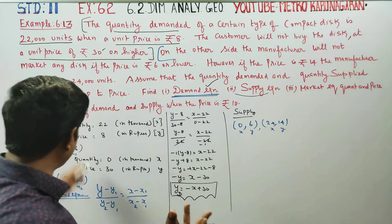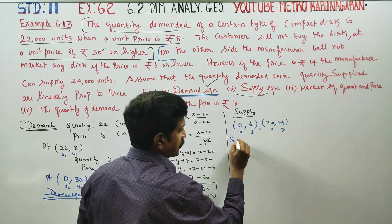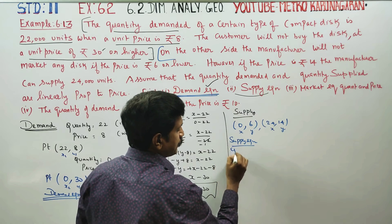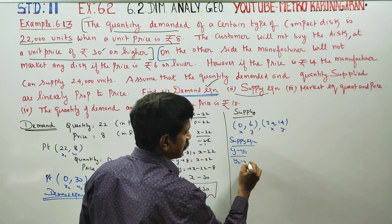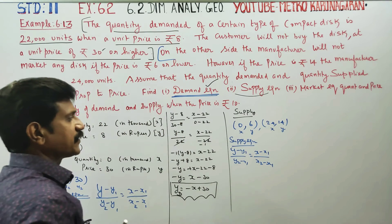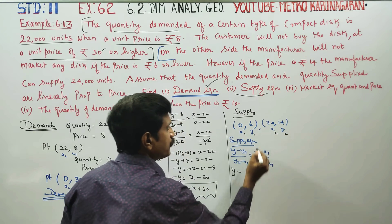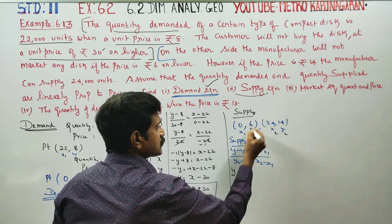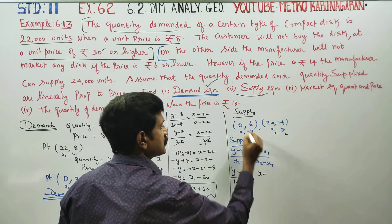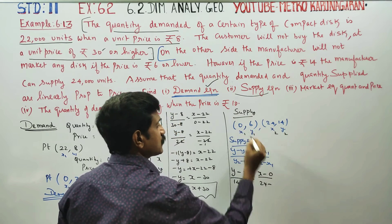Applying the supply equation using the two-point formula: (y - y1)/(y2 - y1) = (x - x1)/(x2 - x1). Substituting: y - 6 divided by 14 - 6 equals x - 0 divided by 24 - 0. So y - 6 over 8 equals x over 24.